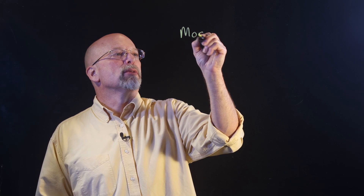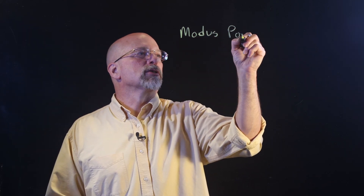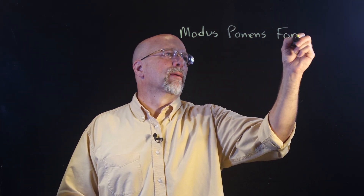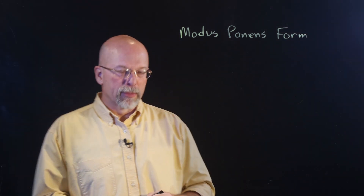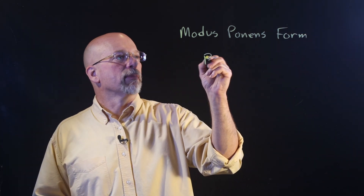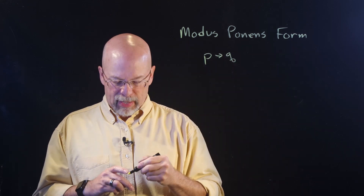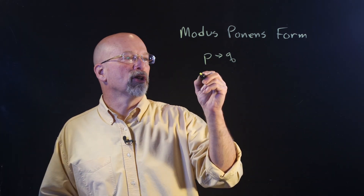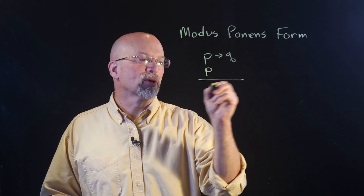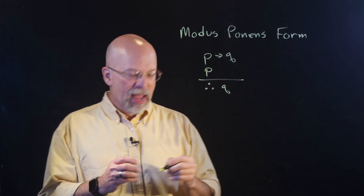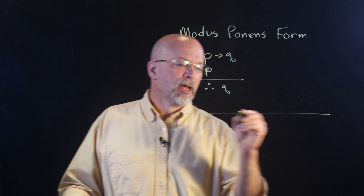A very common form of these proofs is the modus ponens. The modus ponens form is based on that implication — we've got P implies Q. What we're saying is: if P implies Q and P is true, then we've got Q. And we can do this with a truth table.